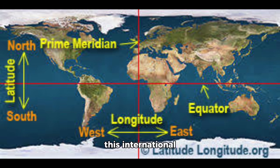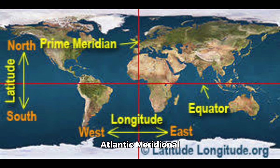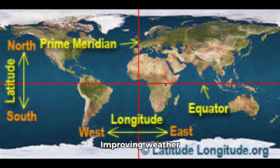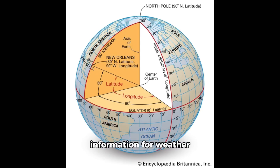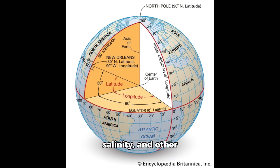NOAA plays a vital role in this international effort, contributing to the maintenance and data collection of the PIRATA array. The data collected by PIRATA buoys, including the sole buoy at Null Island, is essential for understanding climate variability. PIRATA data helps scientists study phenomena like the Atlantic Meridional Overturning Circulation (AMOC) and its influence on global climate, improve weather forecasting through more accurate prediction models, and monitor ocean conditions such as sea surface temperature, salinity, and other oceanographic variables.